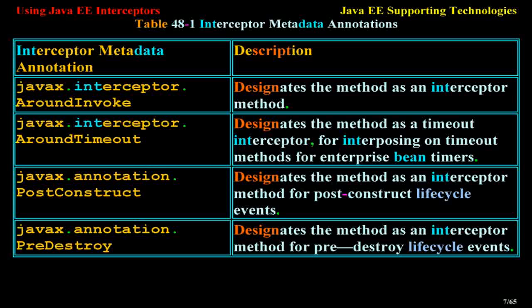The annotation javax.annotation.PostConstruct designates the method as an interceptor method for post-construct life cycle events. The annotation javax.annotation.PreDestroy designates the method as an interceptor method for pre-destroy life cycle events.